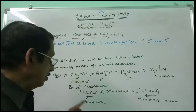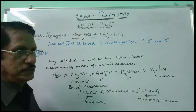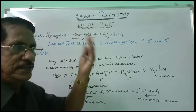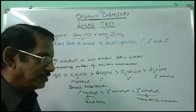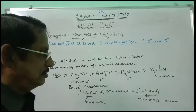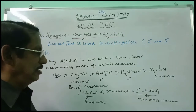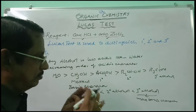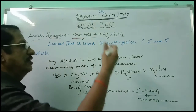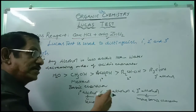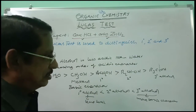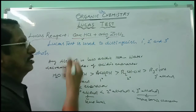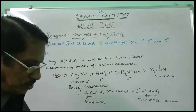Don't forget — even primary alcohol also gives the Lucas test and shows white turbidity, but only at heated conditions, at high temperature. At ordinary temperature it gives no precipitate at all. Lucas reagent gives an immediate result with tertiary alcohol, slowly with secondary alcohol, and no reaction at all with primary alcohol at ordinary temperature. This is because of the more basic character of tertiary alcohol, the less basic character of secondary alcohol, and the least basic character of primary alcohol.